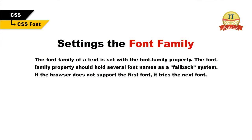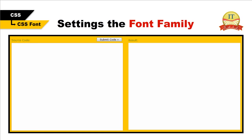Setting the font family. The font-family property should hold several font names as a fallback system. If the browser does not support the first font, it tries the next font. Start with the font you want and end with the generic family to let the browser pick a similar font if no other fonts are available. If the name of a font family is more than one word, it must be in quotation marks, like font-family: 'Times New Roman'. More than one font family is specified in a comma-separated list.